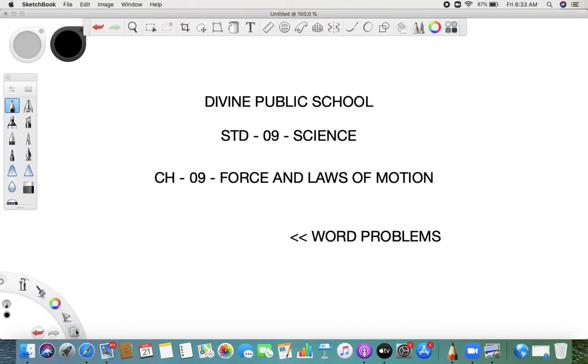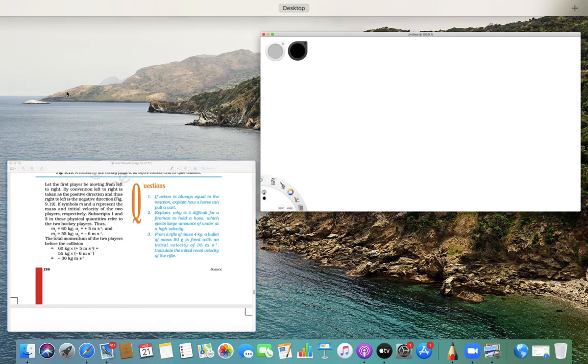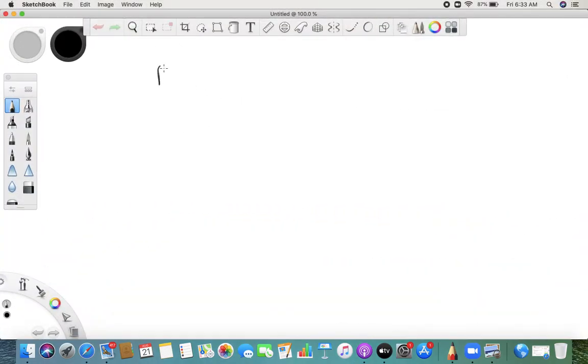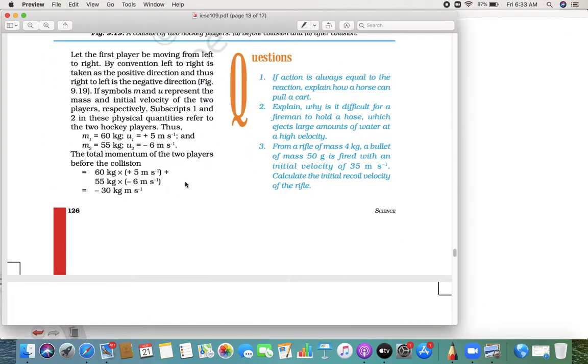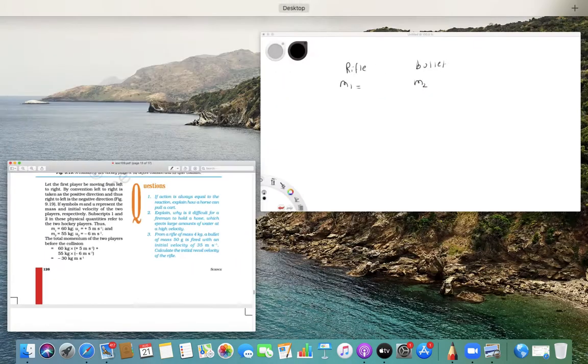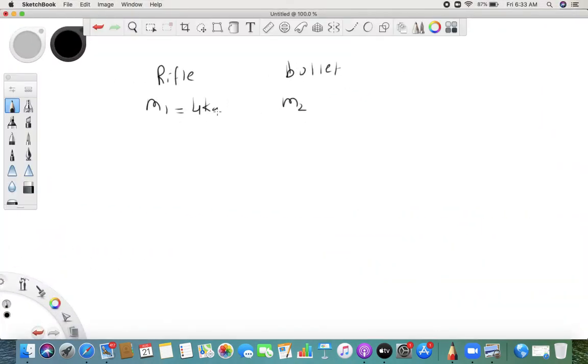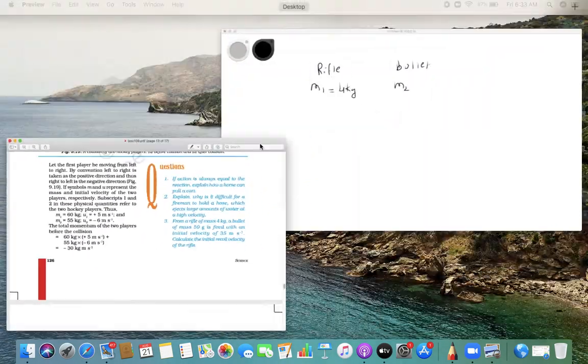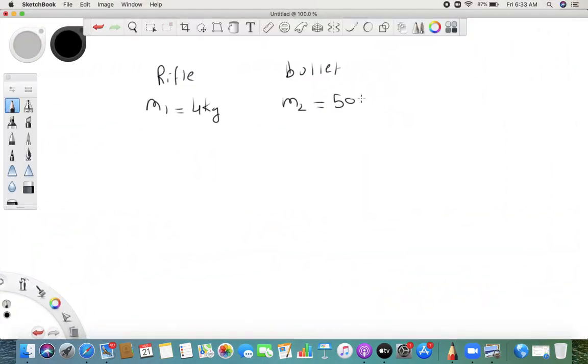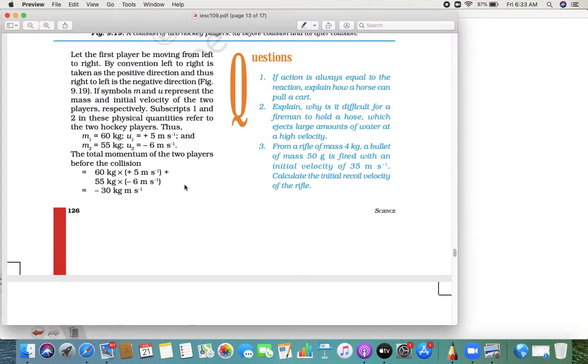Let me show you. So a rifle - there are two objects, one is the rifle and one is the bullet. Both masses are given: the mass of the rifle is 4 kg and the bullet is 50 grams.